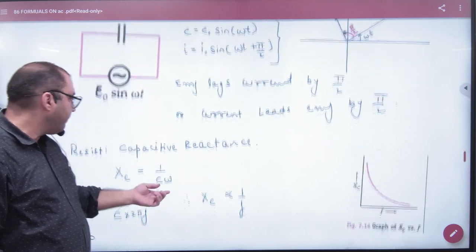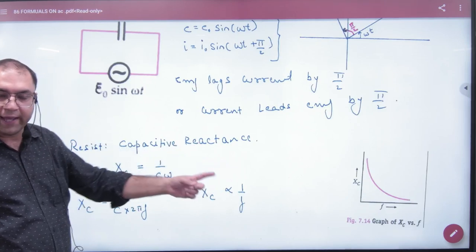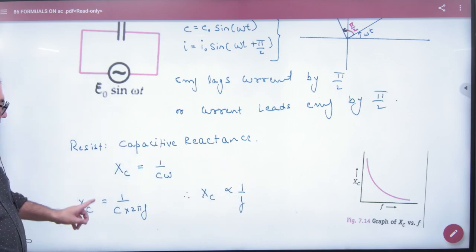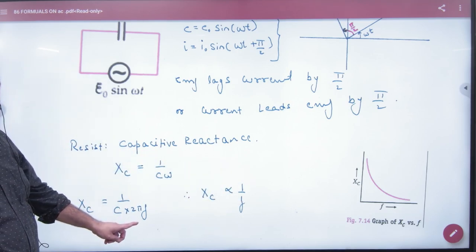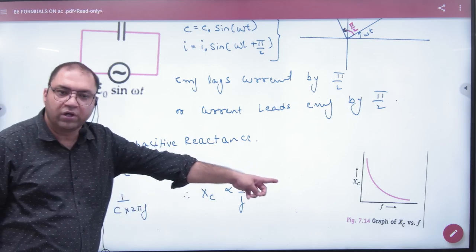What do we call the resistance? Capacitive reactance. This paper is very important. XC, capacitive reactance and frequency graph plot. So XC is 1 by C omega. Omega is 2 pi frequency. So XC is inversely proportional to frequency.